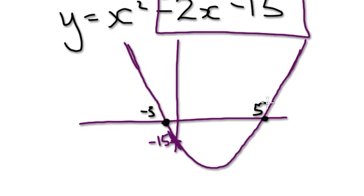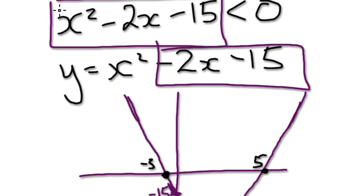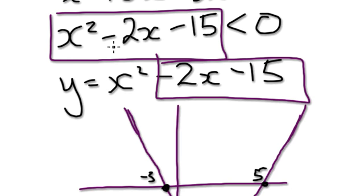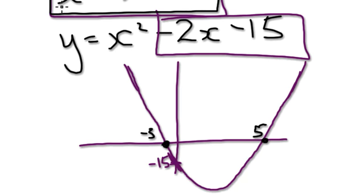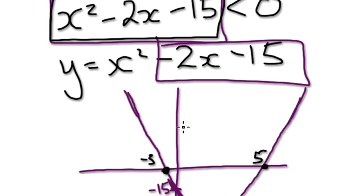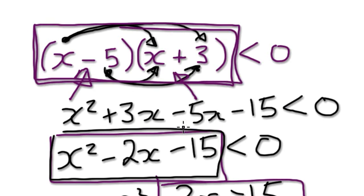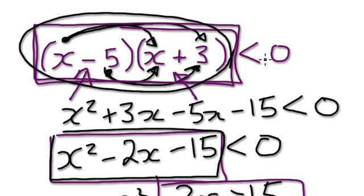so when you draw a graph, when you draw a graph of y equals this thing here, it will look like this. OK. Now, going back to our original inequality here, we want this whole thing here to be strictly, strictly less than 1.